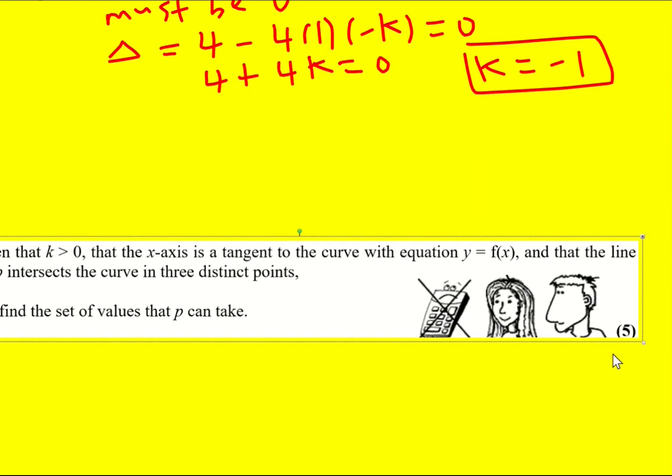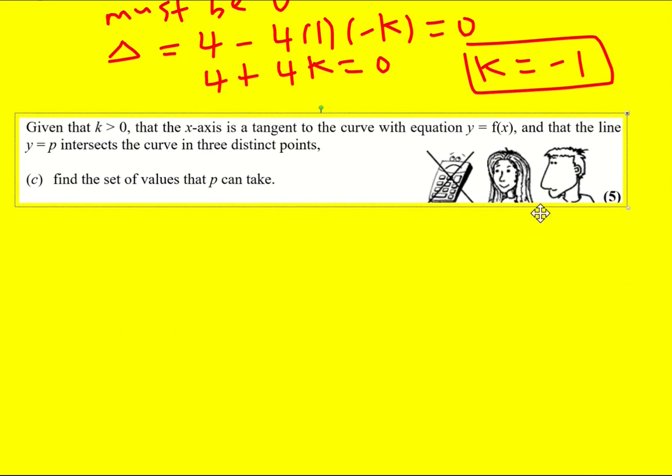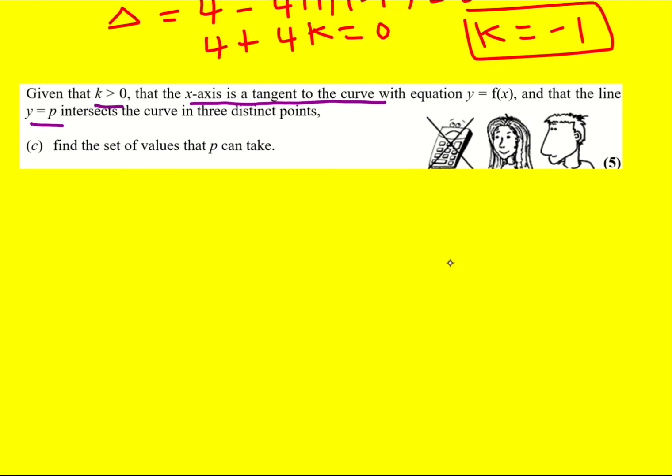Now we're on to the last part. Given that k is greater than 0, and the x-axis is a tangent to the curve, and that the line y equals p intersects it in three distinct points, find the set of values that p can take. Okay, a sketch is really going to help us here. So we know it's a positive cubic. It's not going to be something like this because we have an x term, we already know that. Remember, we know that x equals 2 is a factor, so we need the x-axis to be a tangent.